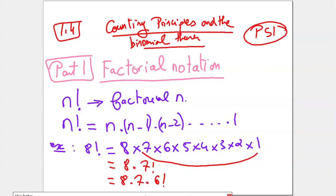If I want to read this, I don't read 'n factorial.' This sign is the factorial, but we read 'factorial n.' When I say factorial n, it means you are multiplying all the numbers from n, all the preceding numbers, till 1. So when I say factorial 8, it means I'm doing 8 times 7 times 6 times 5 times 4 times 3 times 2 times 1.